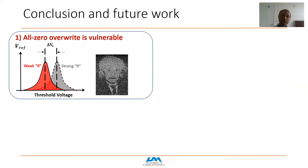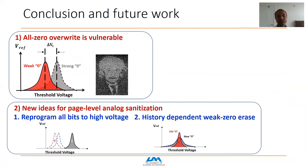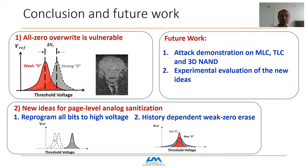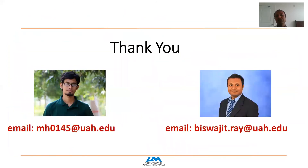In conclusion, we have shown that the all-zero override technique is vulnerable — adversaries can exploit analog properties to recover original data. We have shown two techniques to achieve page-level instant data sanitization: one based on over-programming and another based on history-dependent weak zero creation. Future work includes extending demonstrations to MLC and TLC NAND chips, performing demonstrations on 3D NAND, and experimentally evaluating the robustness of the proposed ideas. Thank you, and I'm happy to take questions.